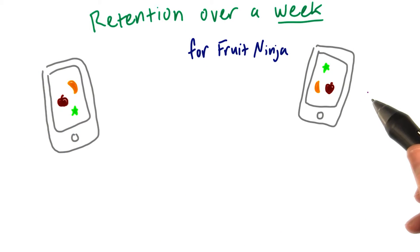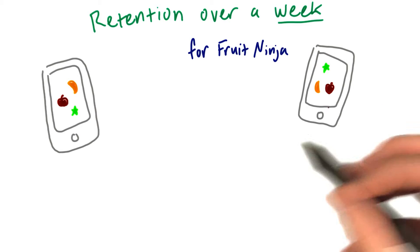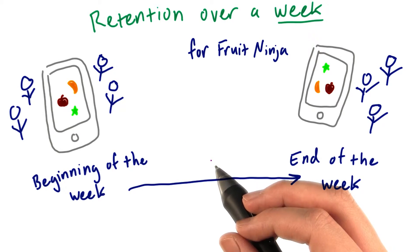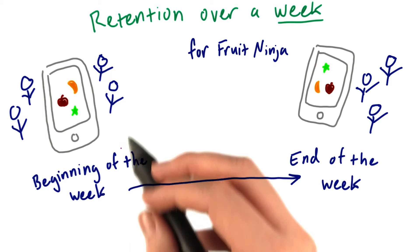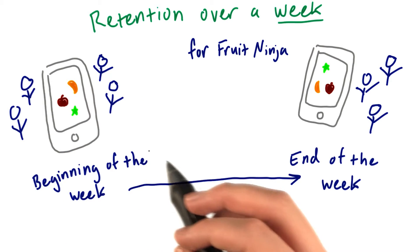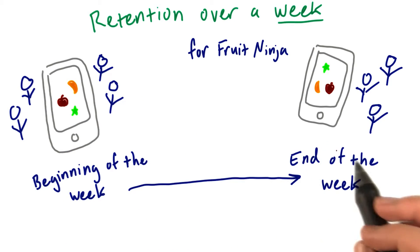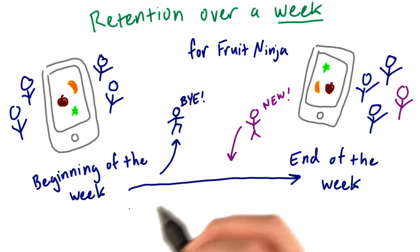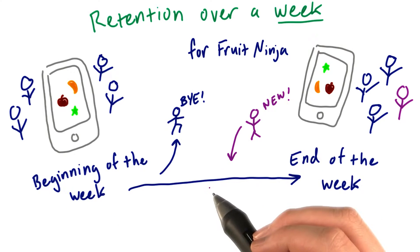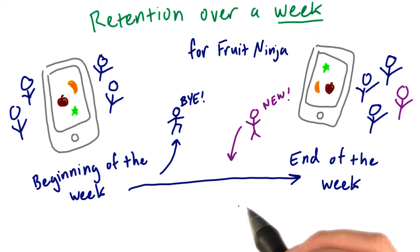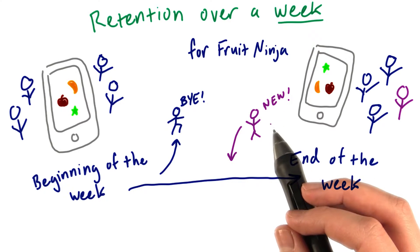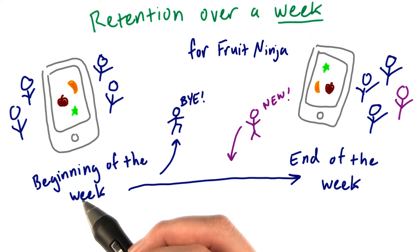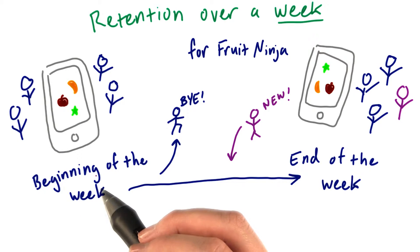Say you want to measure retention over a week for the game Fruit Ninja. That means you'll want to see how many people who started at the beginning of the week are still around at the end of the week. During the week, some of these early users will leave Fruit Ninja and new ones will join. But we don't want to take into account the new ones — we just want to see who started at the beginning of the week and stayed throughout the whole week.